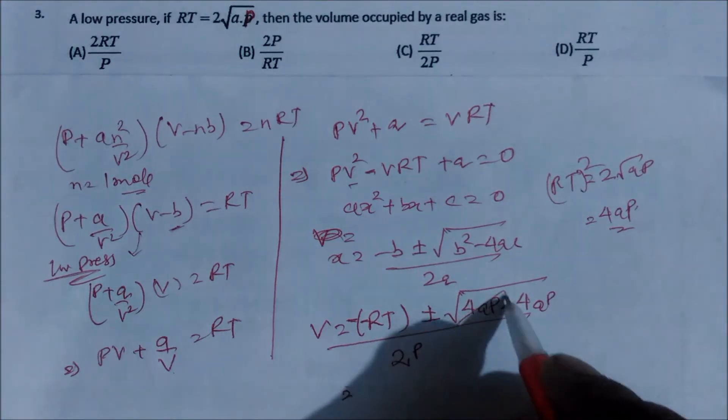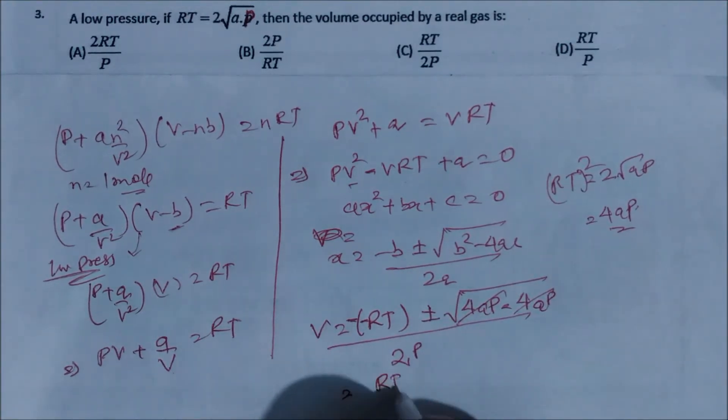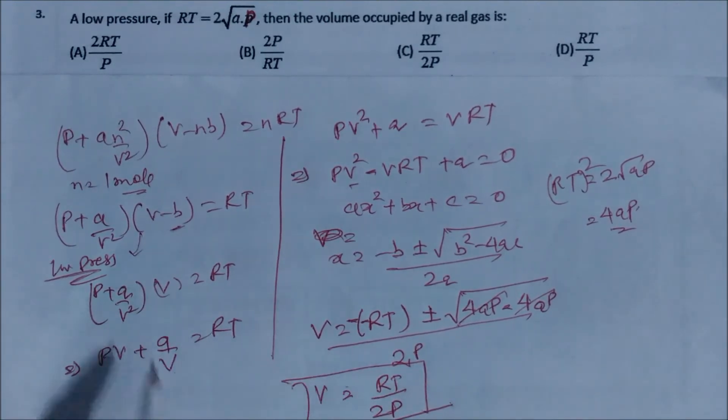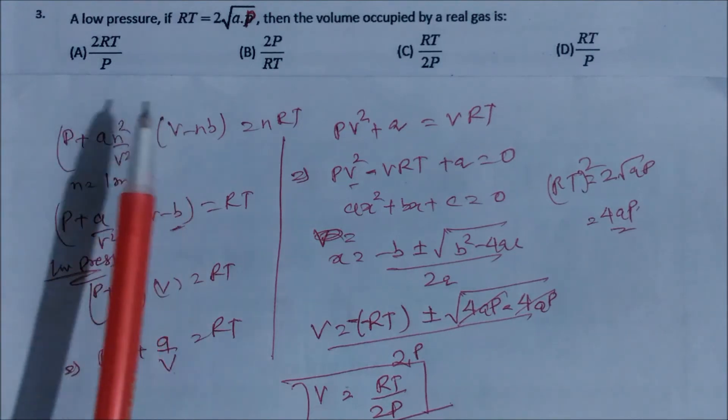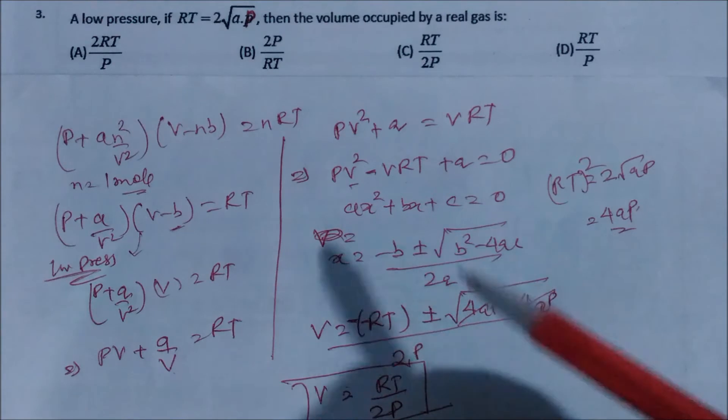Now in this case what I meant, so this will be cancelled out, right? So minus minus becomes plus. So it is RT by 2 into p. So volume becomes your RT by 2P. You can see here, so which is coming in the options. So a is not there, b is not there, so c and d. So c is our answer for this question.